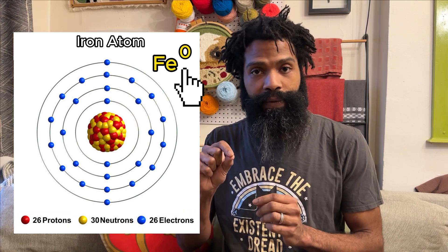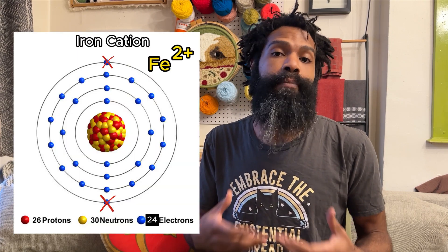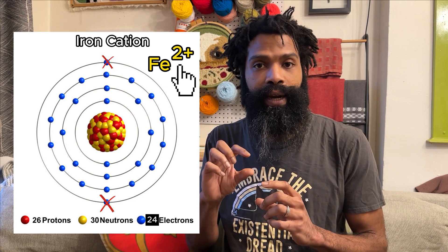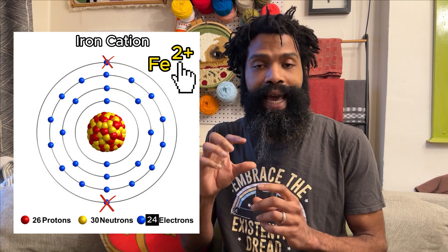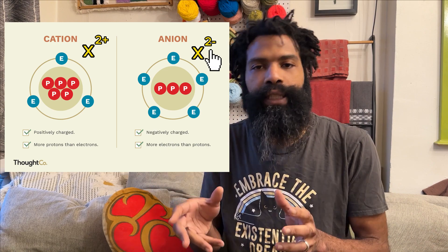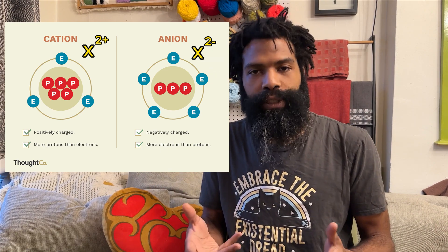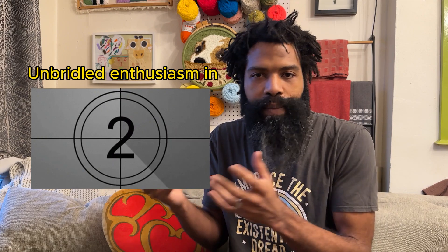When an atom has the same number of electrons as protons, it's neutral — charge of zero. If it has more protons than electrons, it's positively charged — a cation — and the number tells you how many electrons are missing. Negatively charged atoms work the opposite way: the number tells you how many extra electrons there are beyond the protons. Those are called anions.